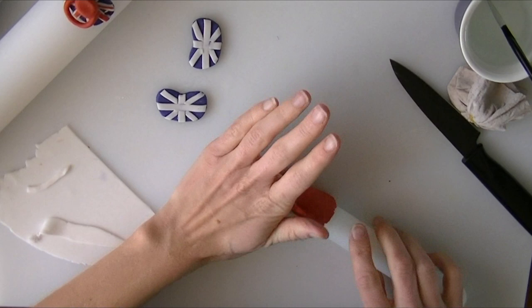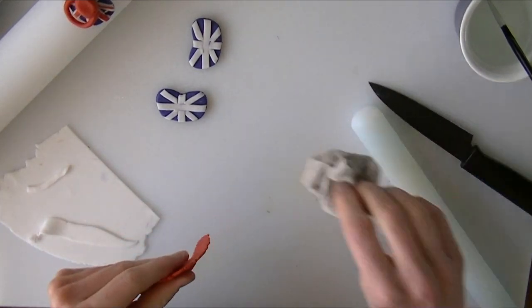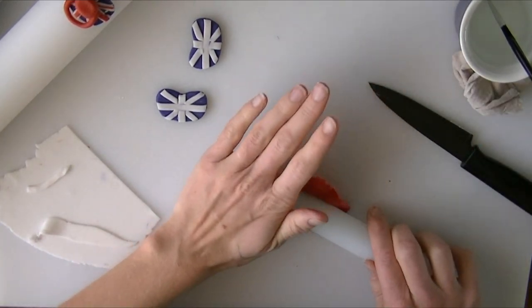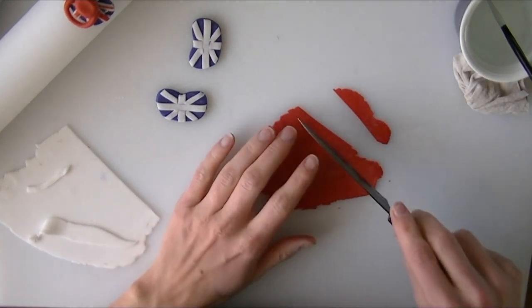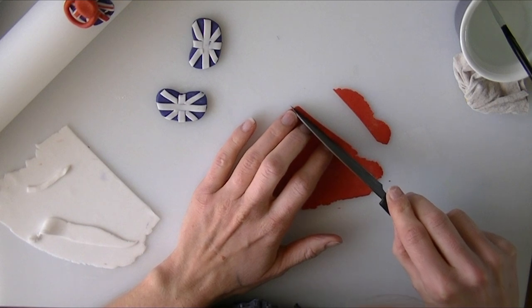If it sticks to your work surface while you're rolling it, just stick a little bit of cornflour on and it should stop it sticking as much. Again, we're going to cut some strips. Just make sure they're a bit thinner than the white.